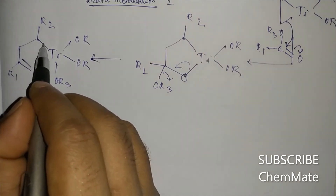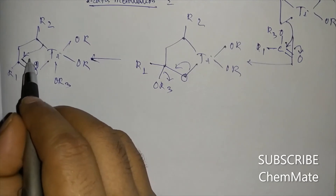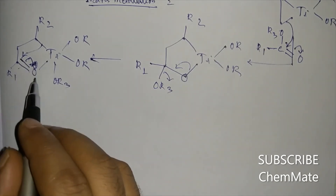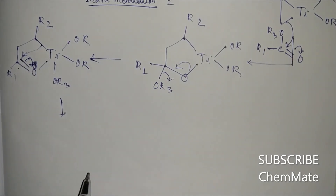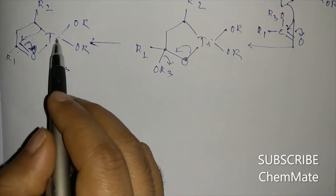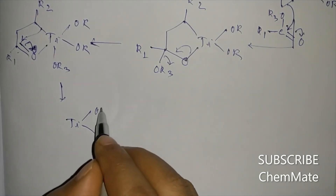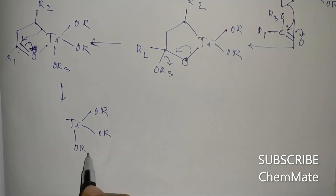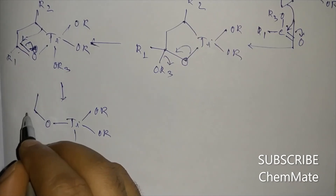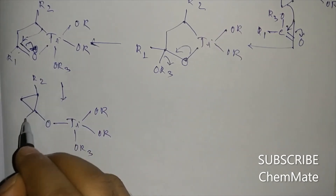This bond will attack into this carbon, and the pi bond will come to the oxygen. So a three-membered ring will be formed here, and the oxygen atom will be connected to titanium. The product at this stage will be O-R3, O-R2, R1 in a cyclopropane-type ring coordinated to titanium.